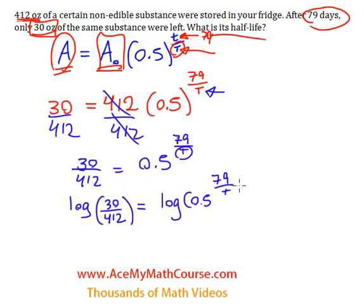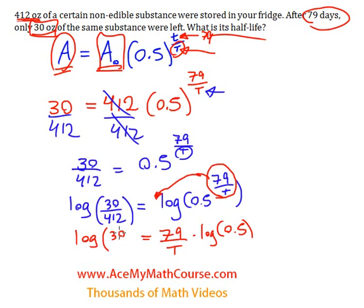Now that I did this, it's a property of logarithms for me to bring down the exponent and multiply it by the log. So I can rewrite this as 79 over T times the log of half. The other side remains the same.